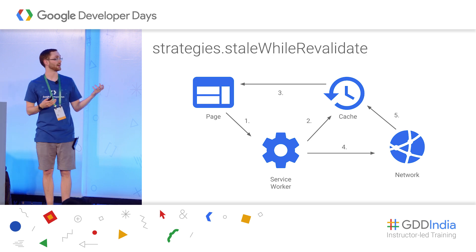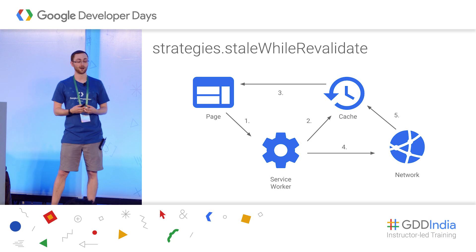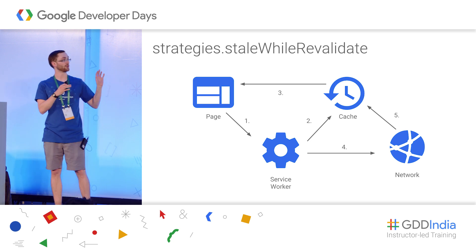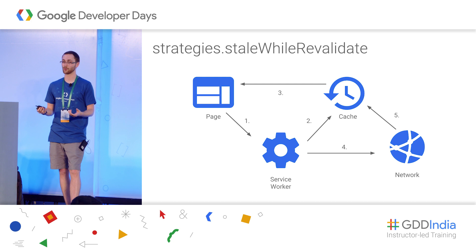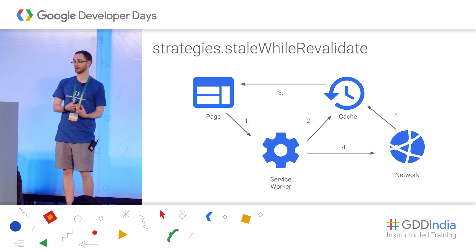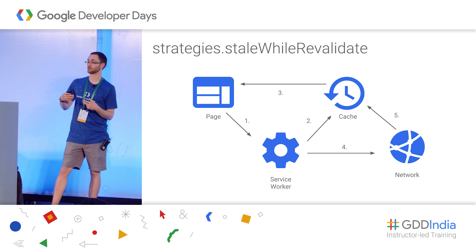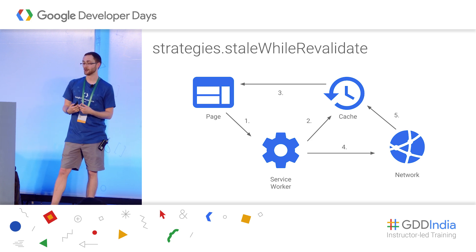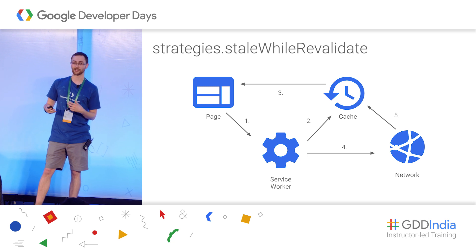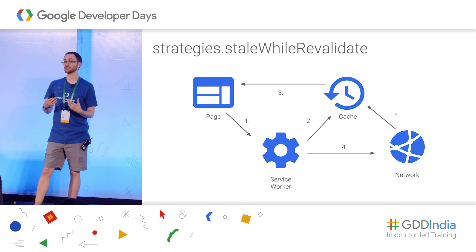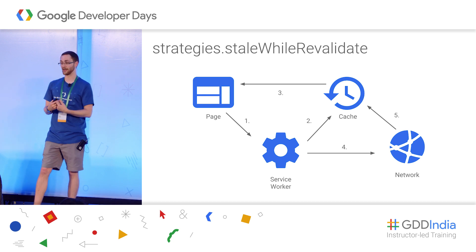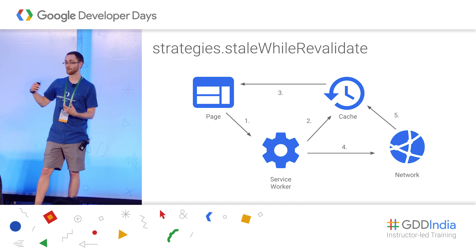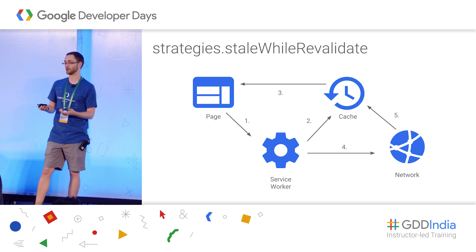There's also a stale-while-revalidate strategy. This serves from the cache immediately — as soon as something is requested, the service worker returns it from cache — and then in the background, goes to the network to get the newest resource and updates the cache. This is useful for something like a user avatar that doesn't need to be up-to-date but should be served quickly. It serves the avatar lightning fast, and in the background updates it so next time they navigate they'll see the newest one.